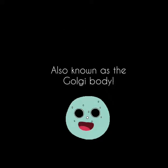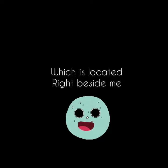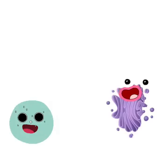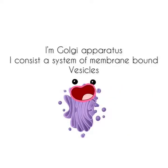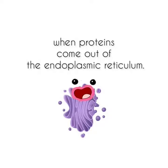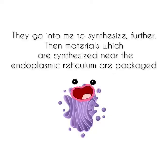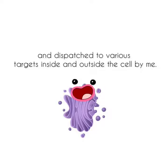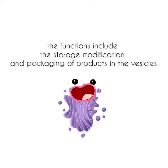Next is the Golgi apparatus, also known as a Golgi body, which is located right beside me. Hi, I am the Golgi apparatus. I consist of a system of membrane-bound vesicles which are arranged parallel to each other in stacks called cisternae. When proteins come out of the endoplasmic reticulum, they go into me to synthesize further. Then materials which are synthesized near the endoplasmic reticulum are packed and dispatched to various targets inside and outside the cell by me. The functions include the storage, modification, and packaging of products in the vesicles.